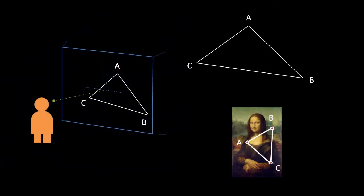Here we see a 3D triangle in the top right, its projection onto the view plane on the left, and the texture for this triangle in the bottom right. Point A on the texture corresponds to point A on the triangles, and likewise with points B and C. To draw the texture on the triangle, we must find the points on the texture that correspond to the points of the triangle on the view plane.